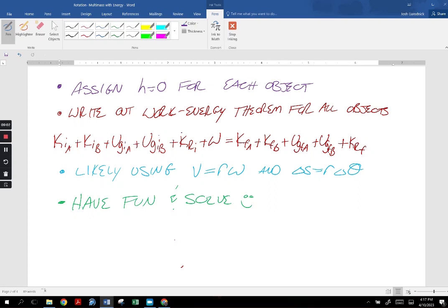You'll write out the work energy theorem for all the objects. It gets a little heavy with all these things. If you feel like you don't need to write it out, that's fine. But at this point, you know, it's your preference. You are likely going to be using V equals R omega and delta S equals R delta theta. Remember, remember, if you are subbing in, and this is like where people screw this up. If you are subbing in omega equals V over R for omega, what is the R? The R should divide out. Okay, so if it's 3R, 3R. You should not have a number there. The R and the R are going to divide out.